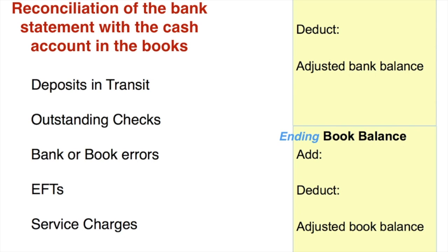Think about a deposit in transit. A deposit in transit is something that you know about that the bank doesn't know about yet, because you made the deposit — and usually when you make a deposit it takes two or three days for it to actually post to your account. So a deposit in transit is already in your books but may not appear on the bank statement. That's going to be an addition to the bank side of the bank reconciliation.